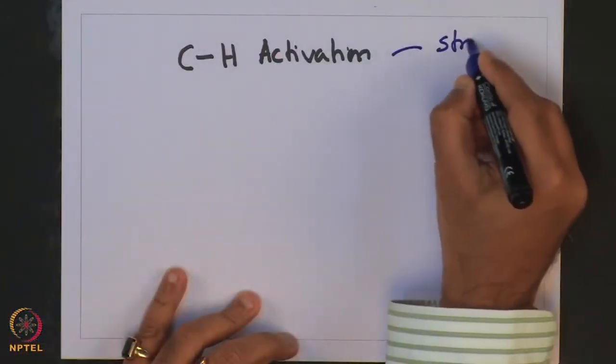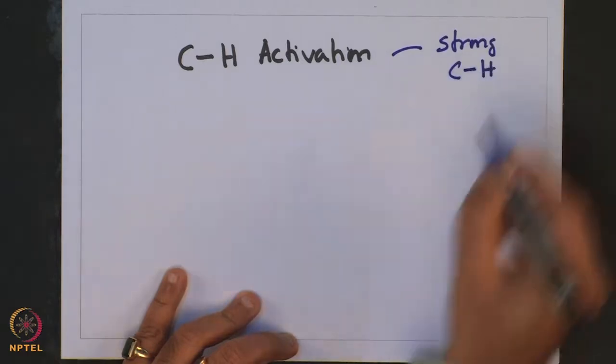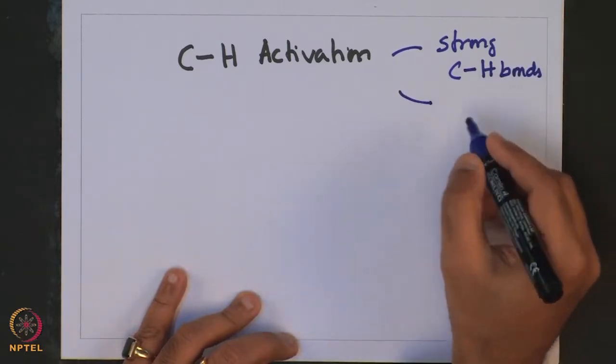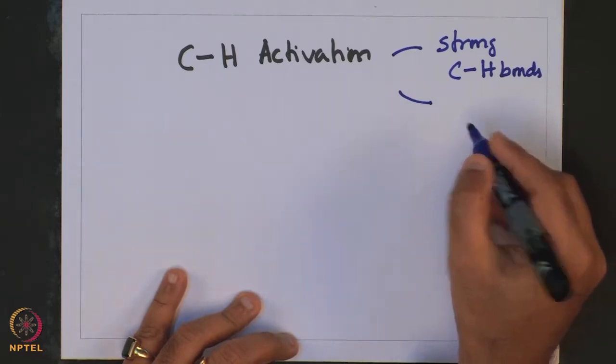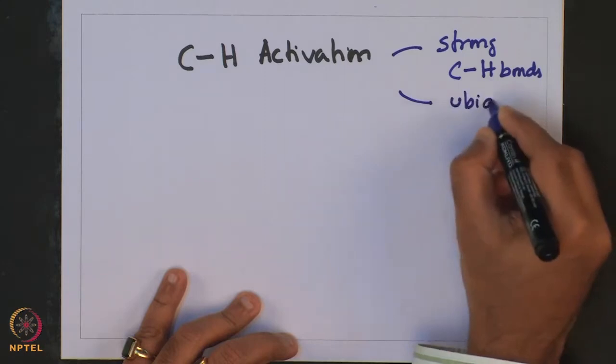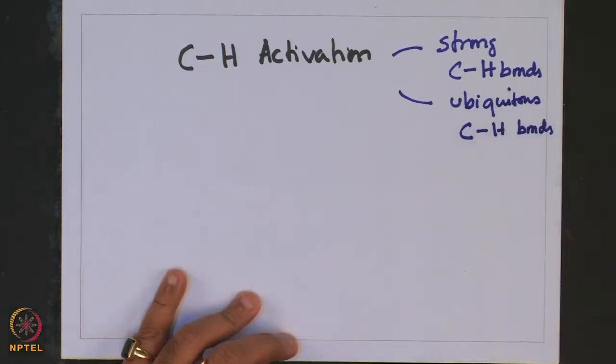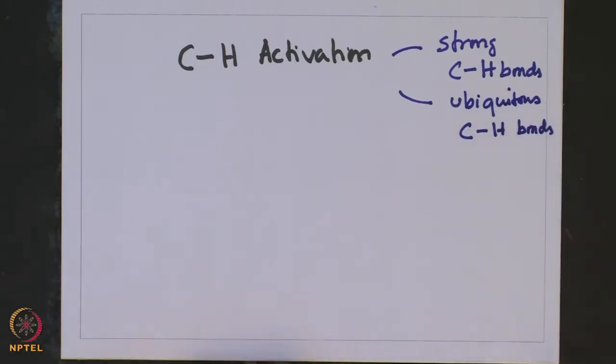An important drawback to this reaction is that this problem is very challenging and not a very simple one. That arises primarily due to strong CH bonds. And also, because of the large number of CH bonds present in several compounds, their ubiquitousness also poses a selectivity problem in CH activation chemistry. So, these bonds are difficult to break and also very difficult to selectively perform the cleavage of.